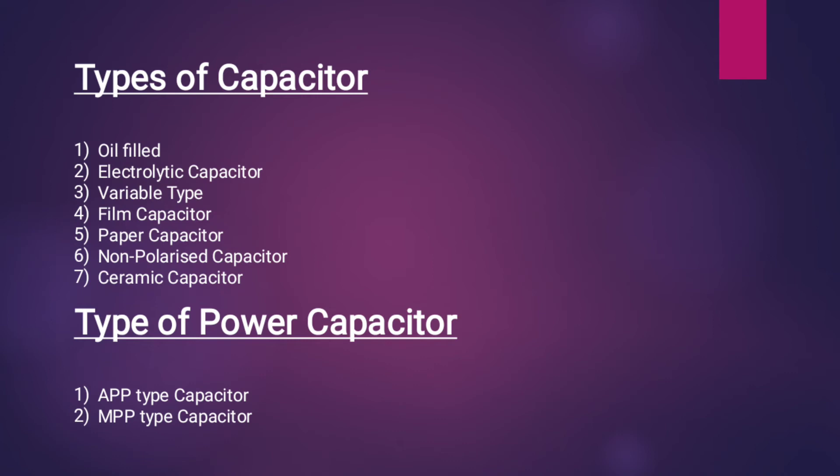The types of capacitors are: first, oil-filled; second, electrolytic capacitor; third, variable type; fourth, film capacitor; fifth, paper capacitor; sixth, non-polarized capacitor; and seventh, ceramic capacitor. Among these, APP type and MPP type capacitors are the most important types.